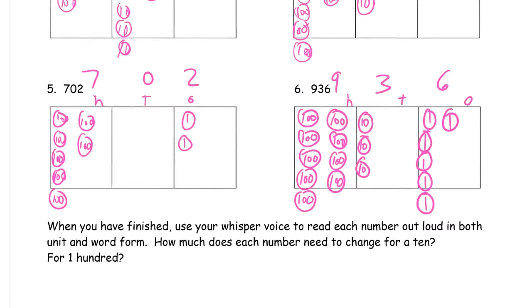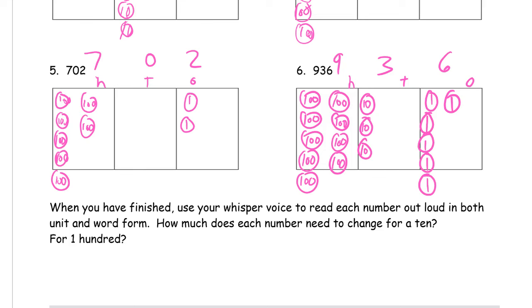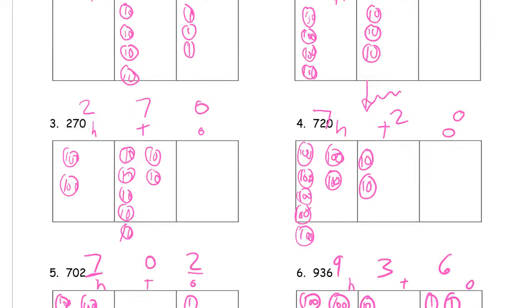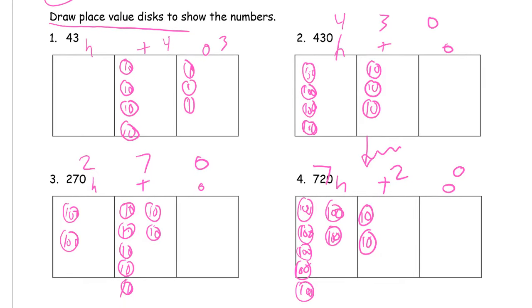Now at the end it says when you've finished, use your whisper voice to read each number out loud in both unit and word form. Remember unit form is saying the words hundreds, tens, and ones for the units for each digit. When we see 702, this digit says seven hundreds, two ones. So when you say it in word form, saying a number in word form sounds exactly the same as saying it in standard form. It's when you write it that makes it different. When you write it in word form, you're using only words, no numerals at all.